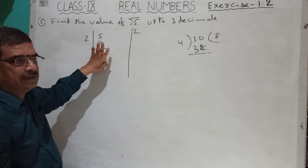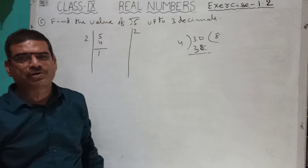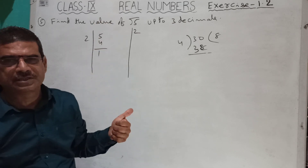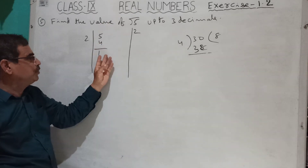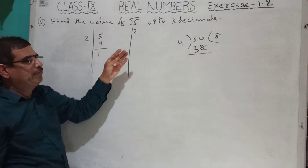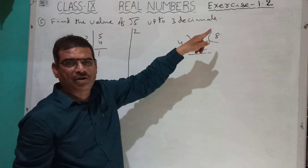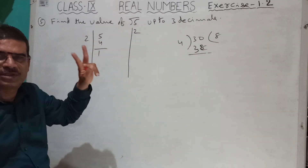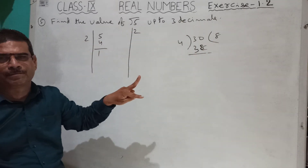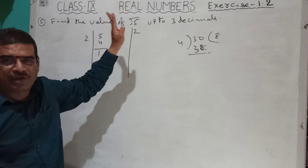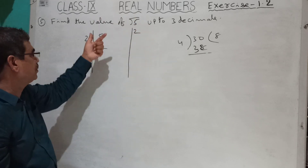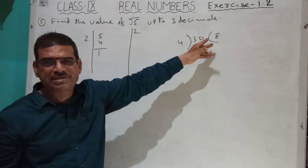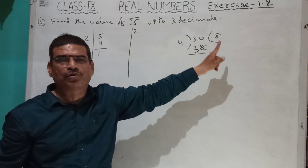In square root, to find the square root method, the second point is: you have to bring down 2 numbers at a time, whereas in division you bring down only one number. Here 2 numbers come down at a time — this is the second rule. In square root method you bring down 2 numbers, whereas in division only one number.